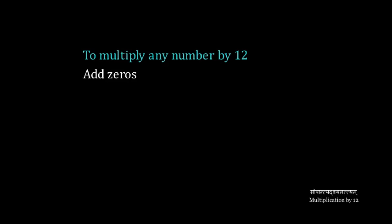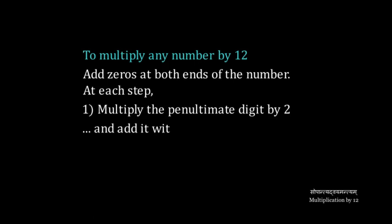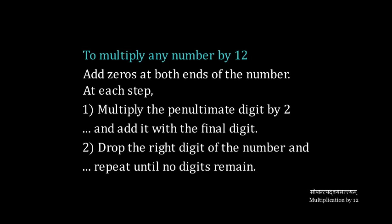To multiply any number by 12, first we add zeros at both ends of the number. Then at each step, multiply the penultimate digit by 2 and add it with the final digit. Then we drop the right digit of the number and repeat the same process until no digits remain.